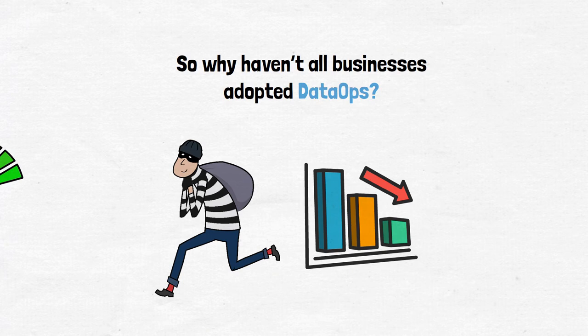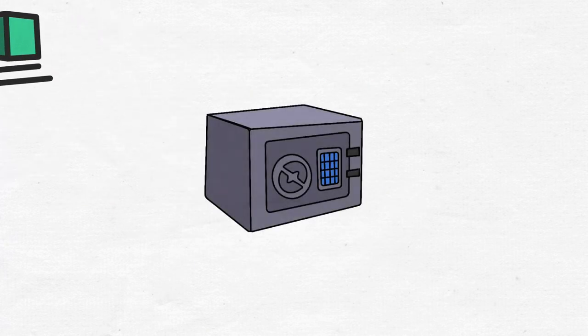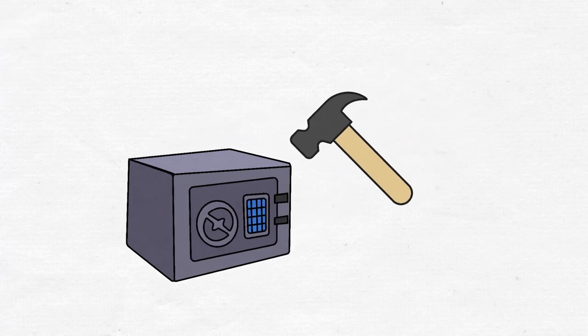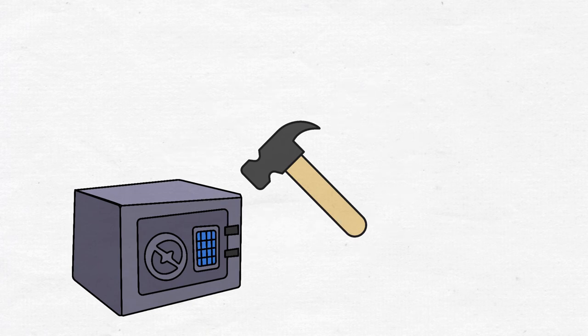Many businesses still use traditional security techniques to protect data. However, data is borderless, and a perimeter-based strategy is flawed. While this might protect a business against an attack from external actors, it still leaves it vulnerable to all the other risks.